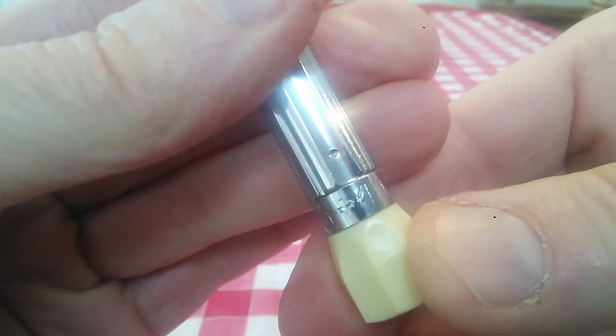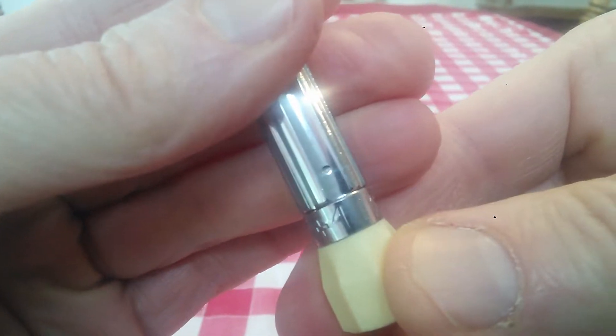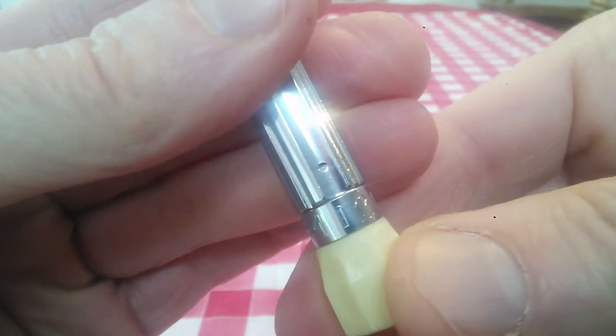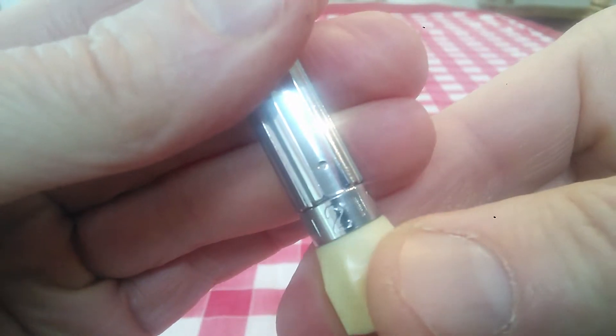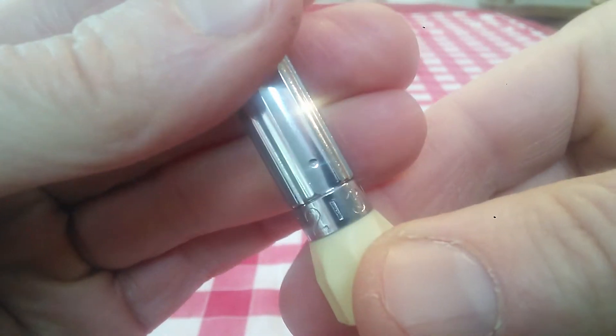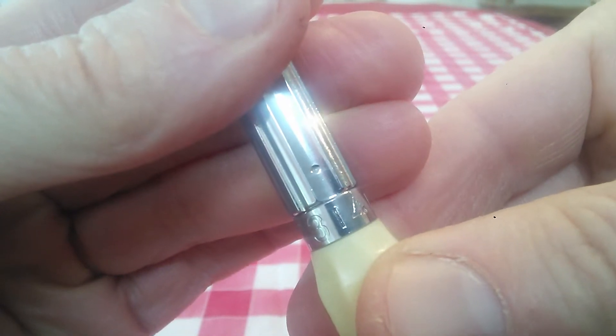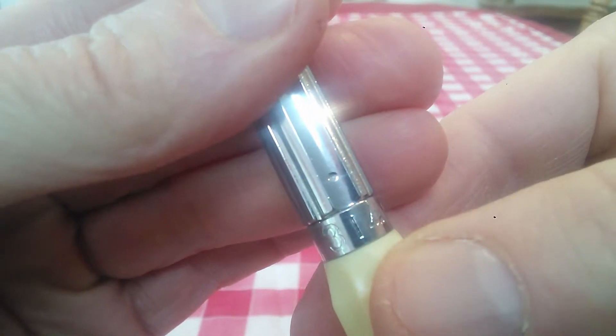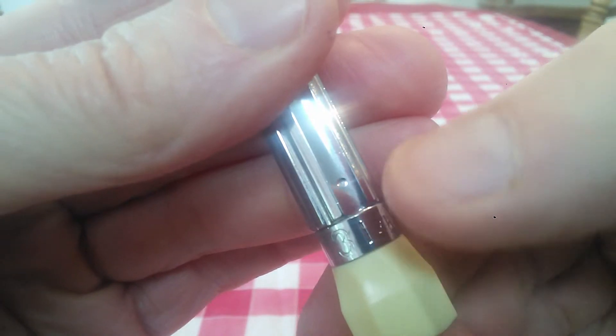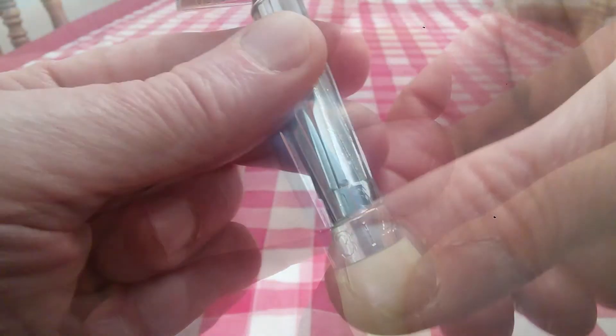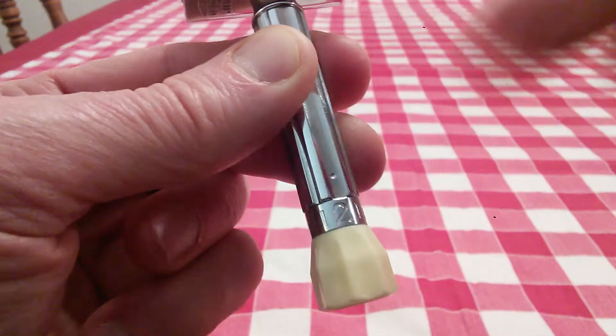Right there. Now you can calibrate upward. There's one, one and a half, two, two and a half, three, three and a half, and so on. Just by lining those numbers and hash marks with that little dot. I like to start at number two.